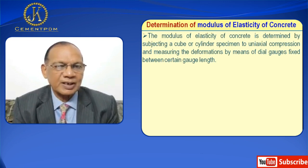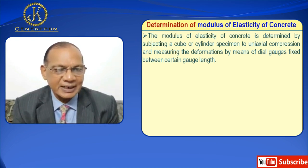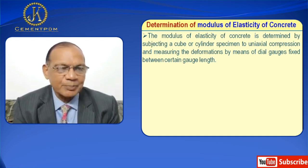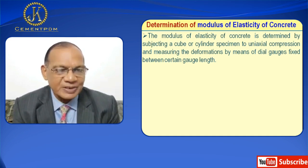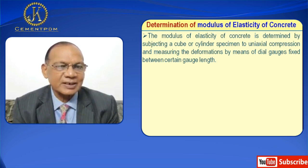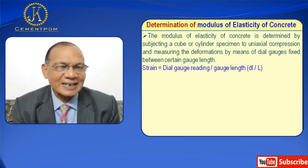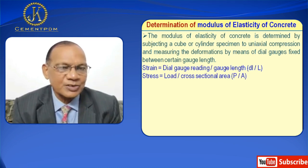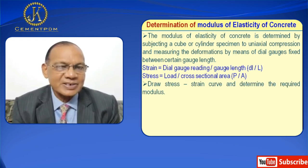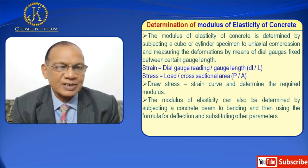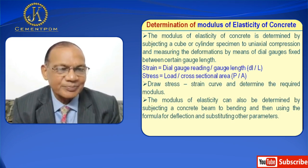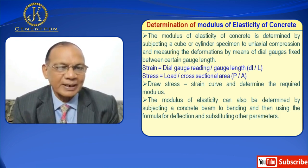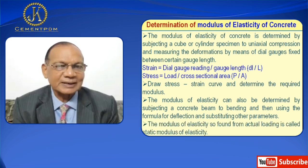Now, determination of modulus of elasticity of concrete. The modulus of elasticity is determined by subjecting a cube or cylinder specimen to uniaxial compression and measuring the deformation by means of dial gauges fixed between a certain gauge length. Strain equals dial gauge reading divided by gauge length (ΔL/L). Stress equals load divided by cross-sectional area (P/A). A stress-strain curve is drawn to determine the required modulus. It can also be determined by subjecting a concrete beam to bending and using the deflection formula.